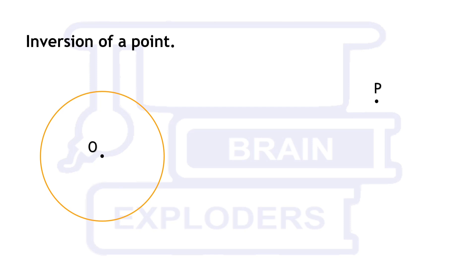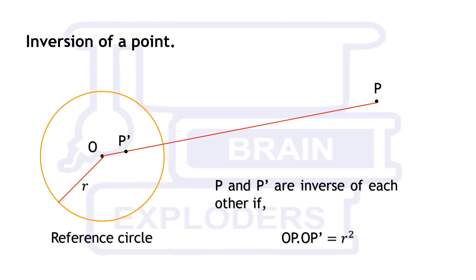Suppose there is a point P. Join the center O of the circle to the point P. A point P' on the line OP is inverse of P if OP times OP' is equal to the square of the radius of the circle. This orange circle is called reference circle.